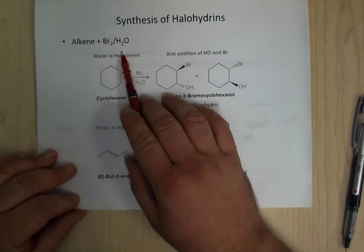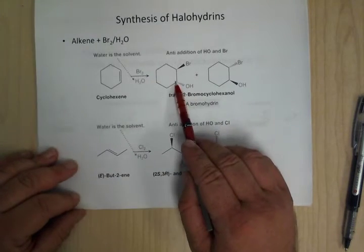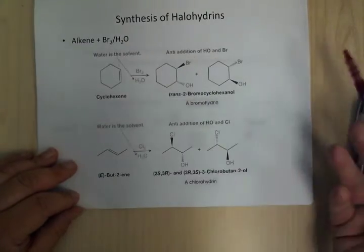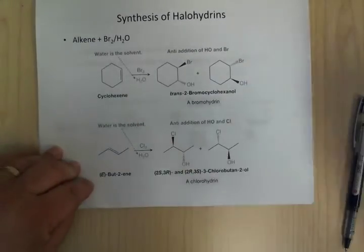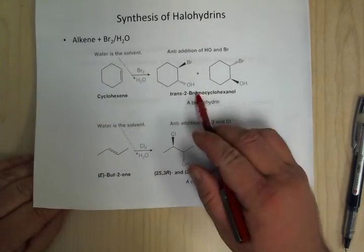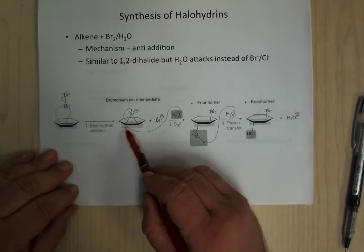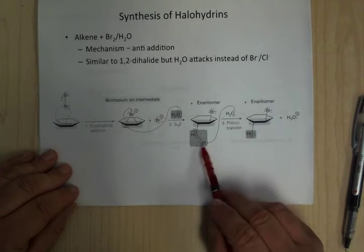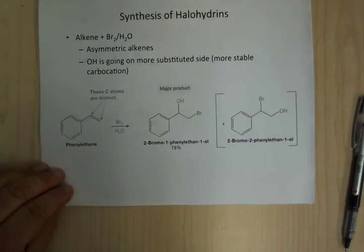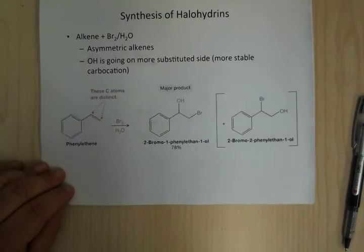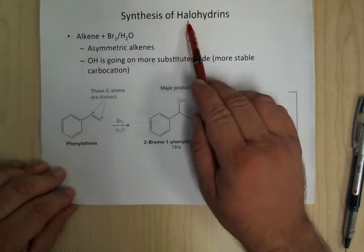If instead you run this in a wet solvent or just add water, what ends up happening is that instead of the Br minus coming in and attacking, it's actually the water that comes in and attacks — there's a lot more water around than Br minus. Otherwise it works exactly the same. That last step is just a little different because water is coming in, but you still get anti-addition — one up, one down. These products are called halohydrins — 'hydrin' for hydrate because we're adding water, and 'halo' for halogen.